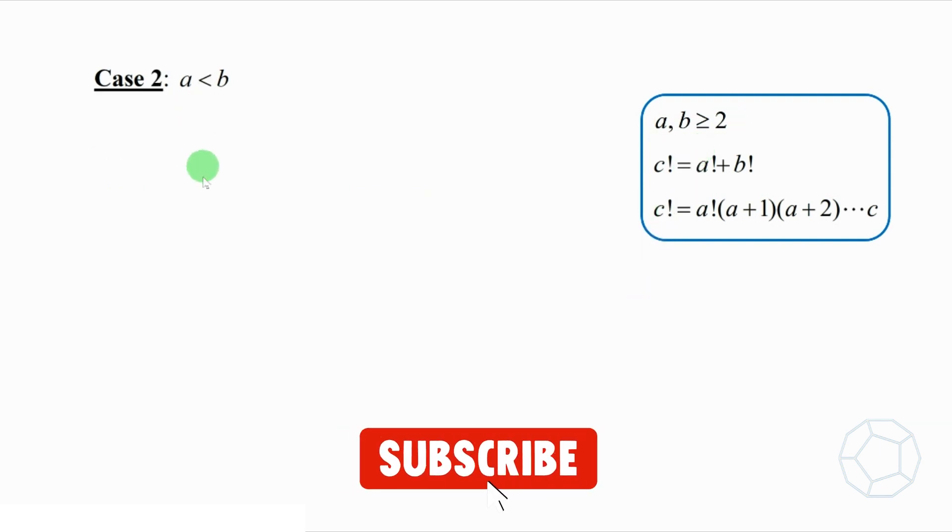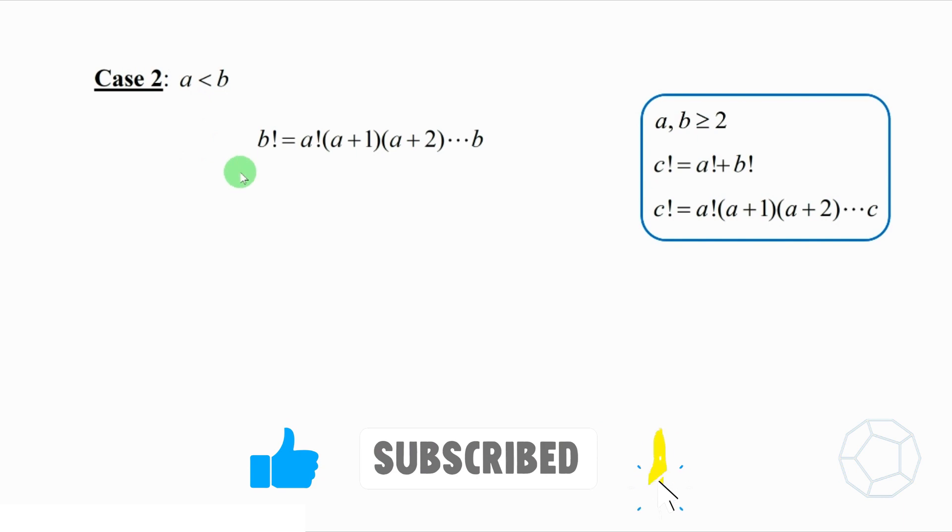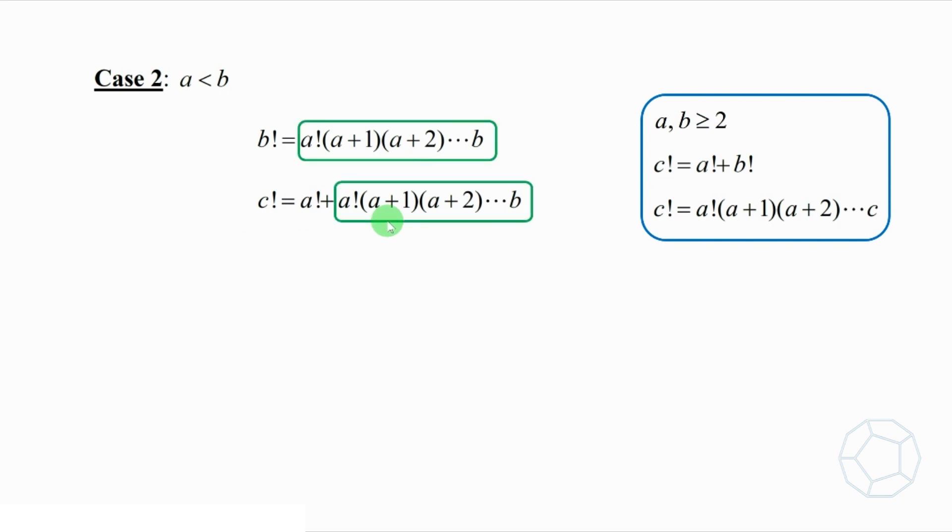Case 2: If a is smaller than b, then b factorial can be written as a factorial times (a+1) times (a+2) all the way up to b. Therefore, c factorial equals a factorial plus this expression of b factorial.